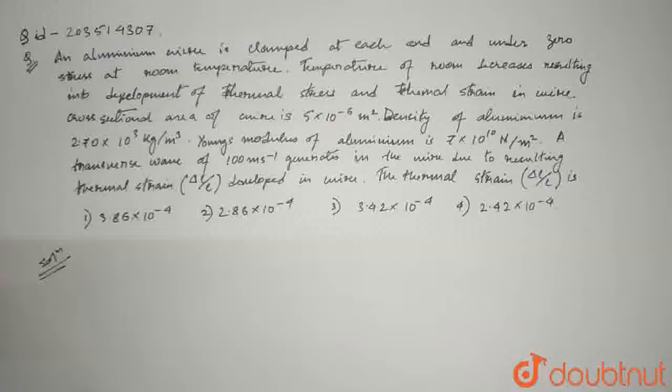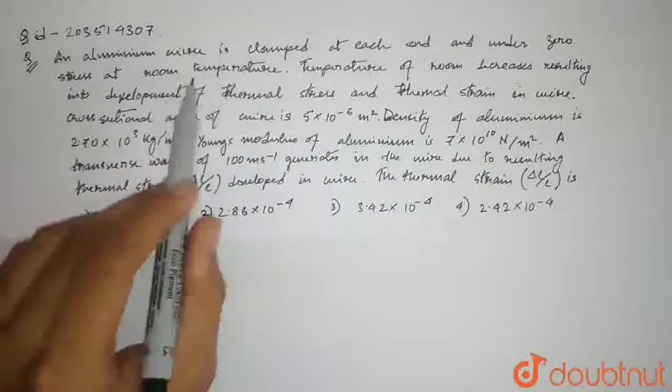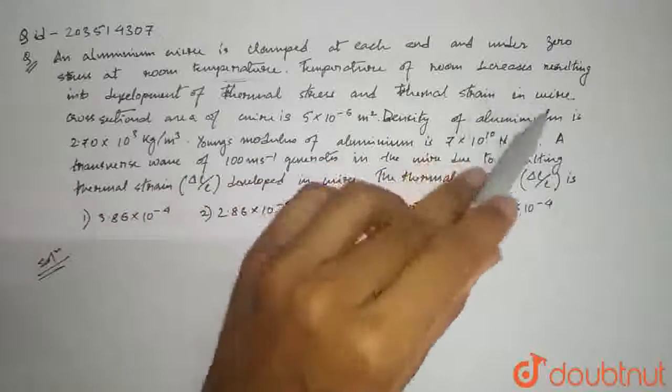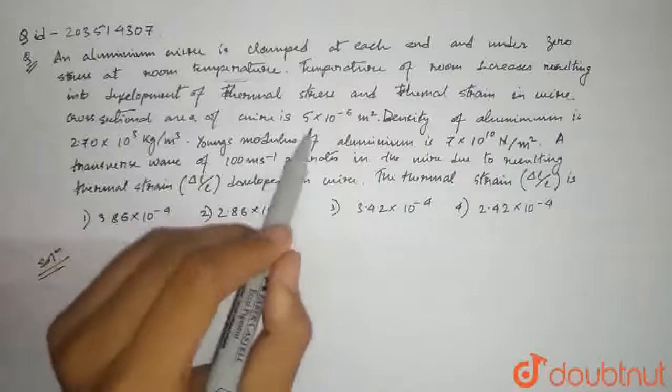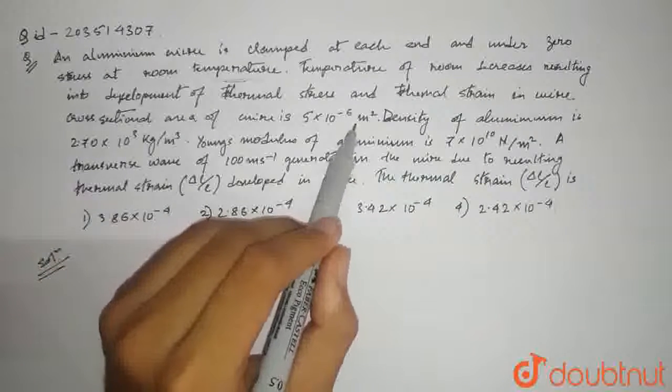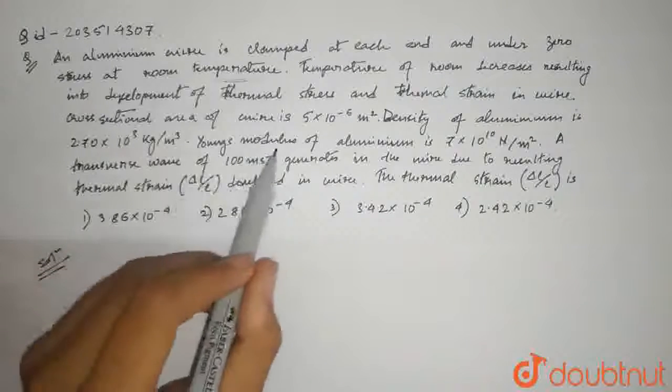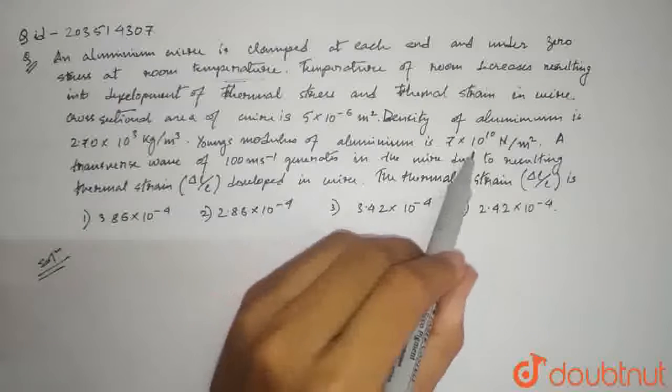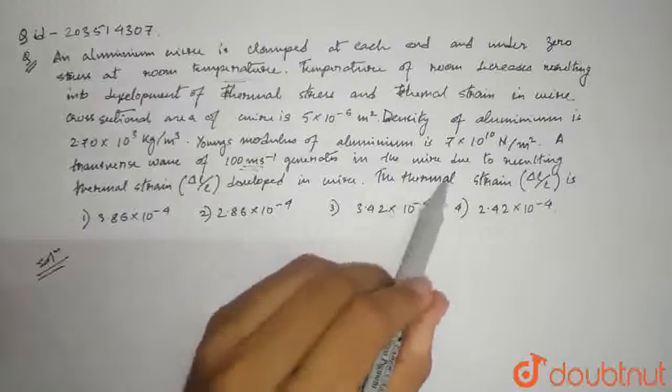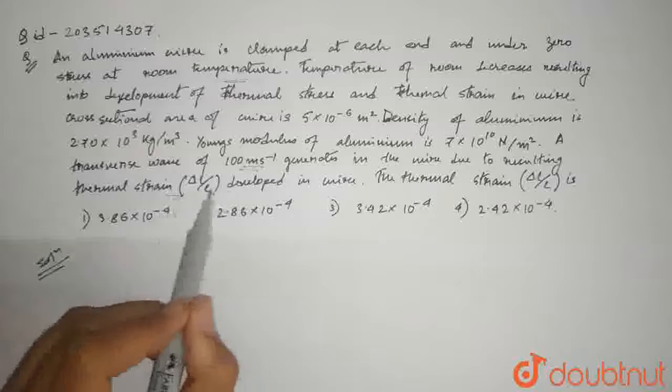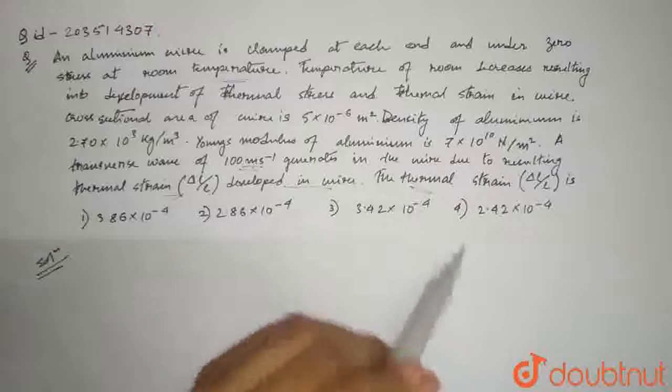Hi students, the question we have given today says that an aluminum wire is clamped at each end and undergoes zero stress at room temperature. Temperature of room decreases resulting in development of thermal stress and thermal strain in wire. Cross-sectional area of wire is 5 into 10 to the power minus 6 meter square. Density of aluminum is 2.7 into 10 to the power 3 kg per meter cube. Young's modulus of aluminum is 7 into 10 to the power 10 newton per meter square. A transverse wave of 100 meter per second is generated in the wire due to resulting strain del-l by l developed in the wire. The thermal strain del-l by l is the thermal strain of the wire.